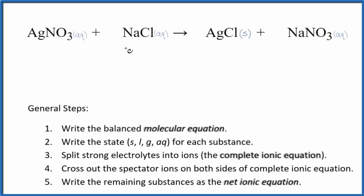I've written the states in here. We have aqueous, aqueous, and then the silver chloride. This is a solid. It would be a precipitate. It would fall to the bottom of the test tube in the reaction, and then the sodium nitrate, that's aqueous.